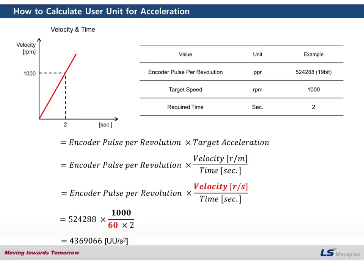Another thing we need to know is the encoder pulses per revolution. In this case, this value is also 52488. And the target speed, as checked in this chart, would be 10,000 RPM. And the required time is 2 seconds.